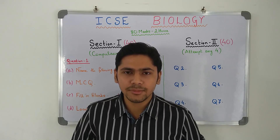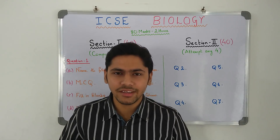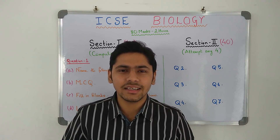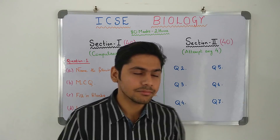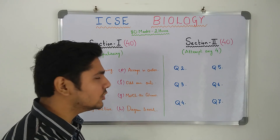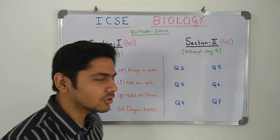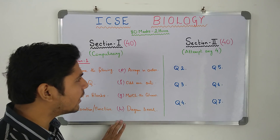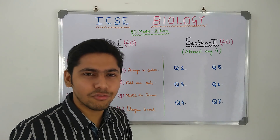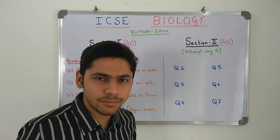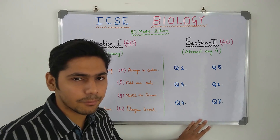Regarding time management for the biology paper, there is enough time. Your paper will be done in about 1 hour 30 to 40 minutes. Section 1, which is the objective type, you will take a maximum of 30 to 40 minutes. Section 2 is a bit longer and a bit more involved — you will take a maximum of 50 to 60 minutes here.